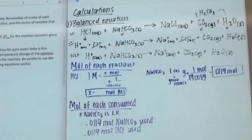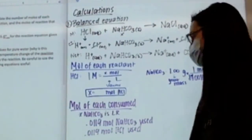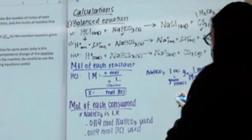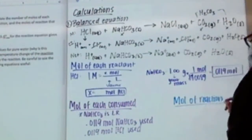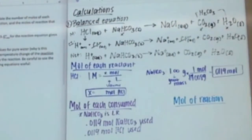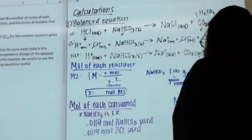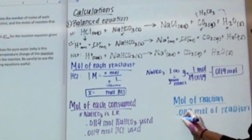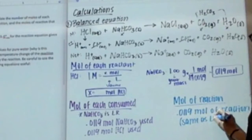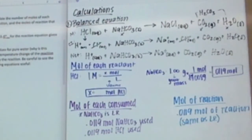The last part of this says moles of reaction that occurs. Moles of reaction is the same as the moles of everything that was consumed. The moles of reaction equals the same value as the limiting reactant — so it's the same as our limiting reactant.